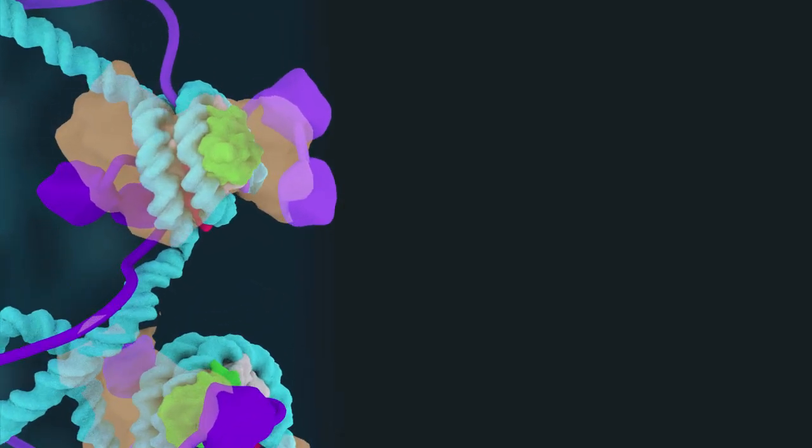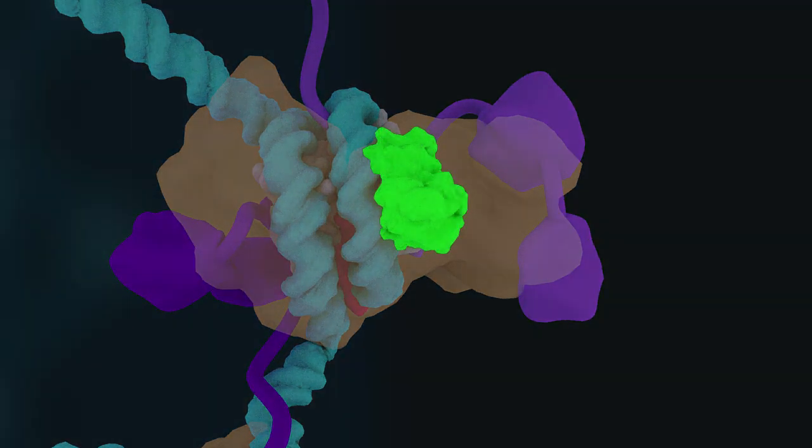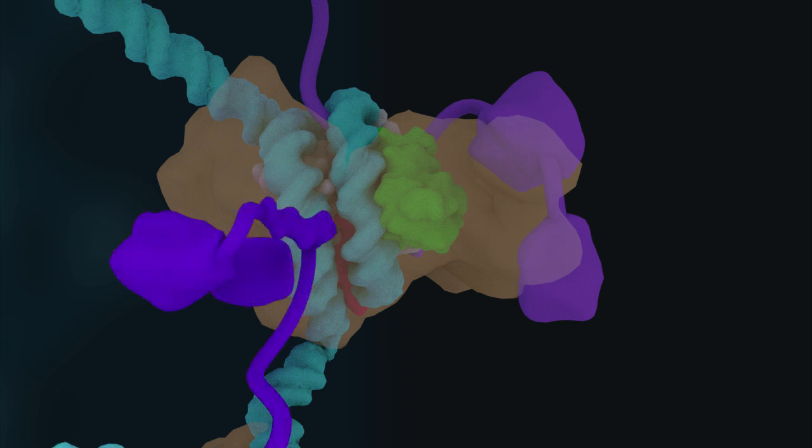A local asymmetry is formed at the level of individual CENP-A nucleosomes, where one side lacks CENP-N while the other contains it. The side lacking CENP-N retains CENP-C and the connections to neighboring chromatin that it generates.